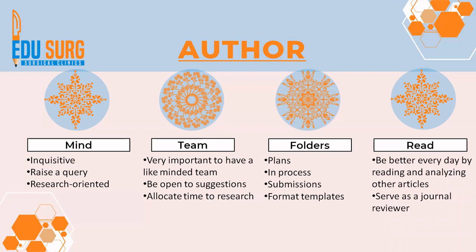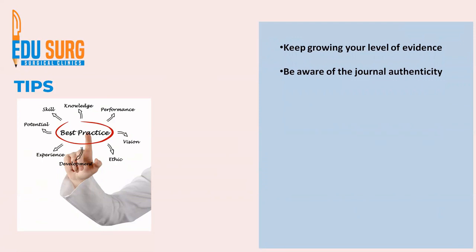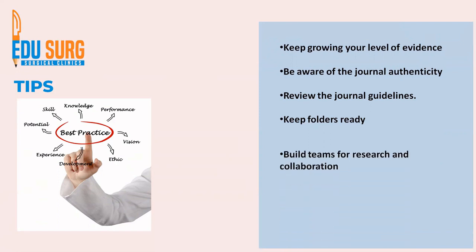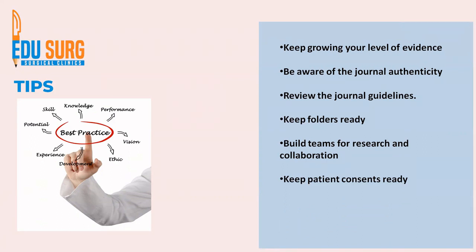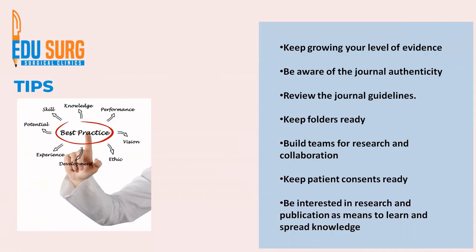Be better every day — you can serve as a journal reviewer, which is a great way to identify mistakes people make while writing. Some reviews may be so good that you learn from those articles. Read and analyze other articles to learn on the literary journey. Keep growing your level of evidence — start from L4 and go towards L1. Be aware of journal authenticity, review periodicity, indexing, impact factor, and peer review process. Don't be happy if a journal claims review is completed in two days — it may be predatory.